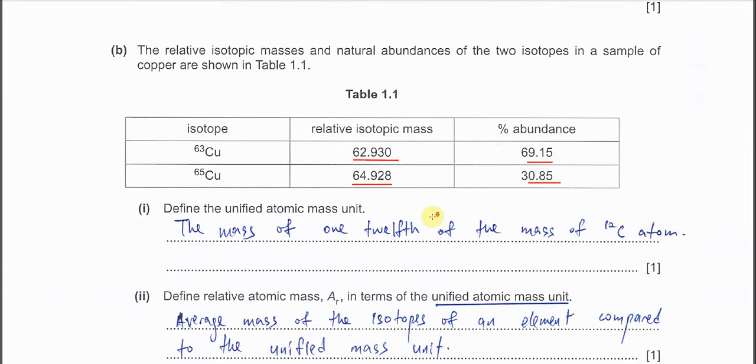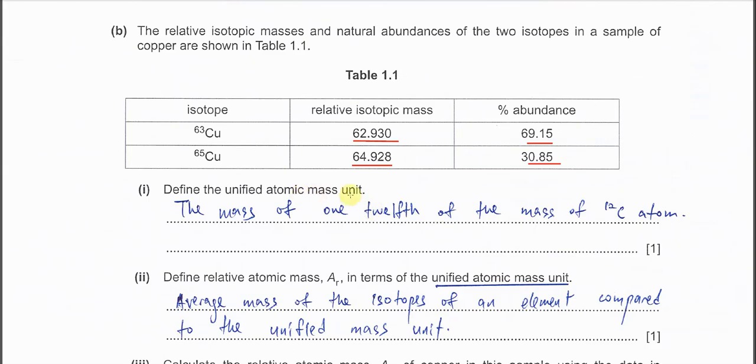Part one, define the unified atomic mass unit. This one is very easy. So it's the mass of one twelfth of the mass of carbon-12 atom. Carbon-12 atom in there, it has 12 AMU, atomic mass unit. Atomic mass unit means AMU. Unified atomic mass unit means is the AMU which we use the carbon-12 as the standard.